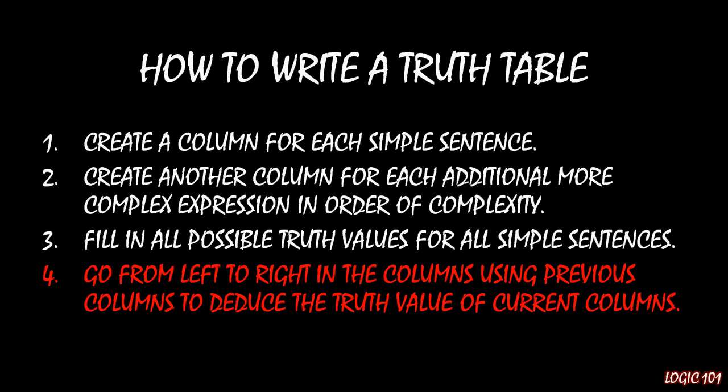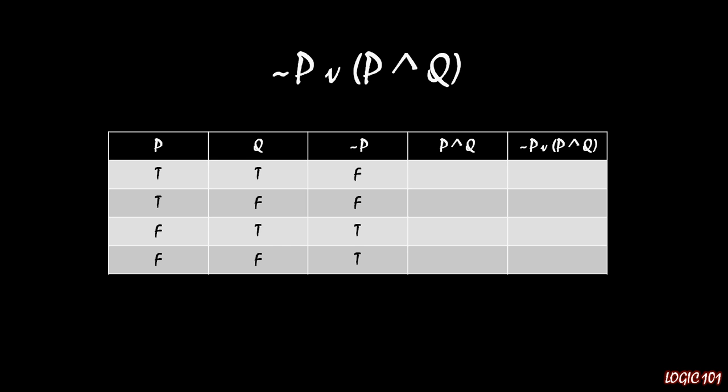And then we are now left with just our final step, which is to go from left to right in the columns using previous columns to deduce the truth value of the current columns. So let's go one by one. Let's start off with this third column, where we have not P. So not P is simply the inverse of P.